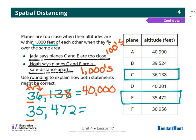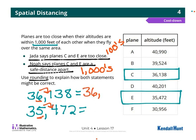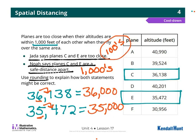So for Noah, it would have to be the thousands place, which gives us 36,000 and 35,000 — exactly a thousand apart, so they would be safe. Today we learned that place value really matters when you are rounding. If Jada rounds to the hundreds place, then the planes are too close. If Noah rounds to the thousands place, they are a safe distance apart.